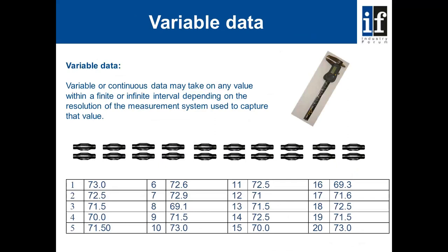When dealing with measurement, we have two types of data that we have to manage. The first type is called variable or continuous data, and it may take on any value within a finite or infinite interval, depending on the resolution of the measurement system used to capture that value. In simple terms, if you stand on your bathroom scales in the morning and weigh yourself, the figure that the scales returns to you is variable data. You can stand on the scales a number of times over a number of weeks and it will return slightly different values every time. On the graphic, we are demonstrating 20 different parts with 20 different measurement results.